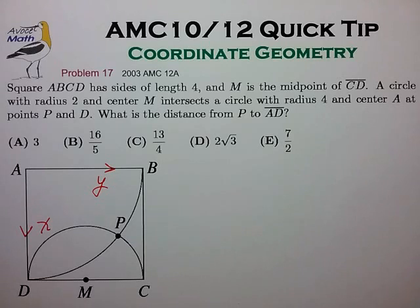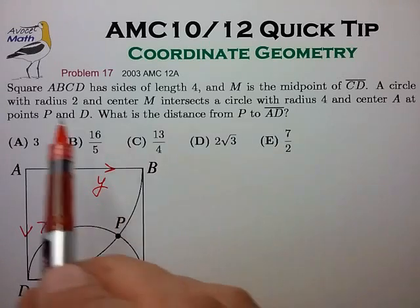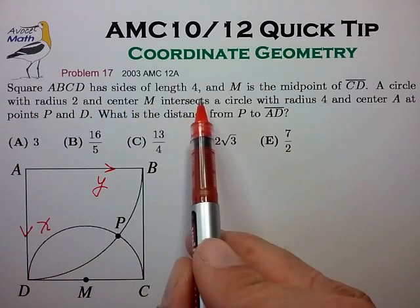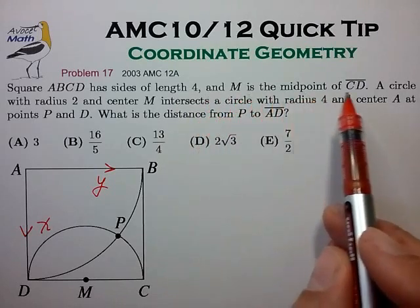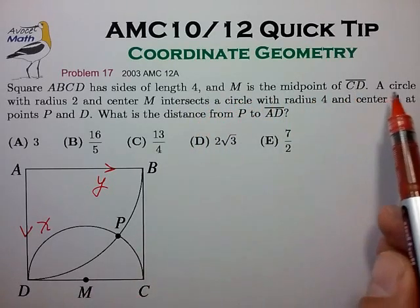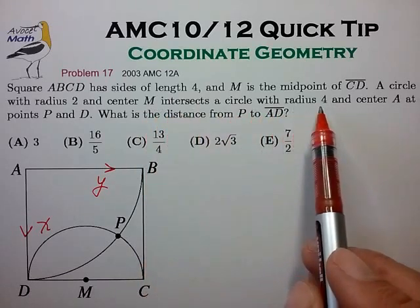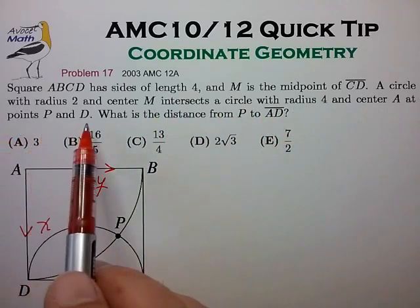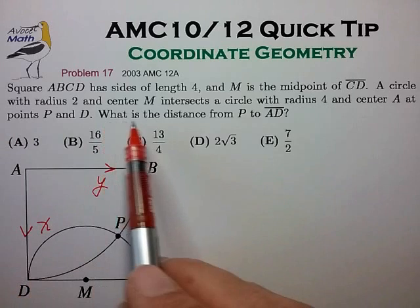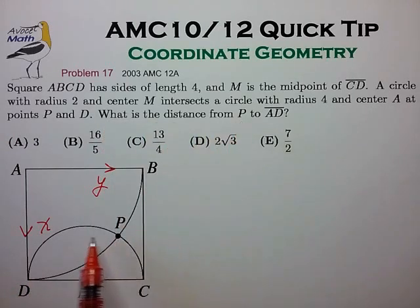So let's look at our example problem from the last video. Square ABCD has side length 4, and M is the midpoint of side CD. A circle with radius 2 and center M intersects a circle with radius 4 and center A at points P and D. What is the distance from point P to side AD?